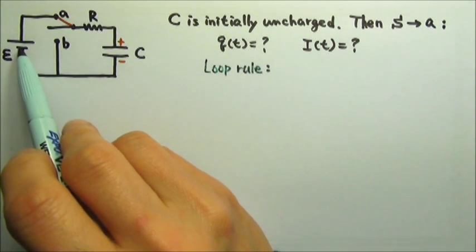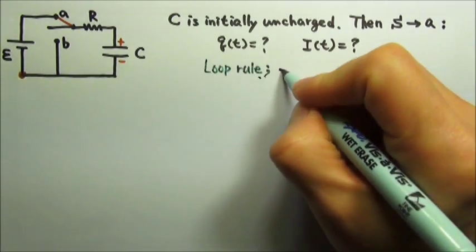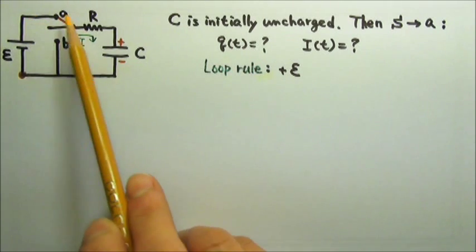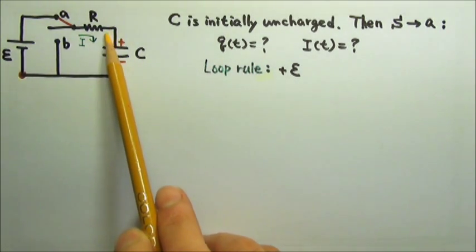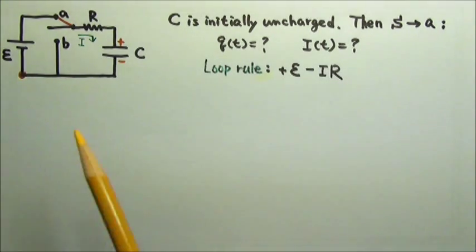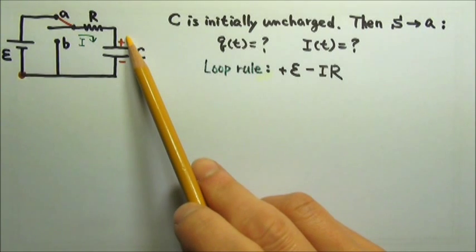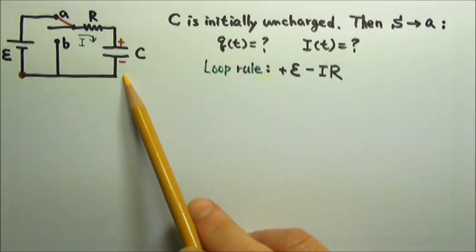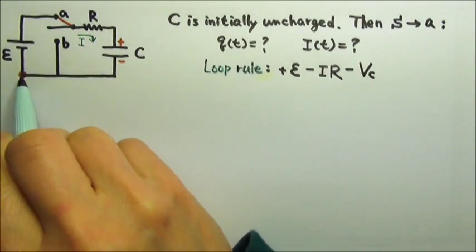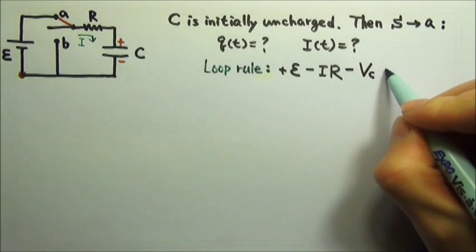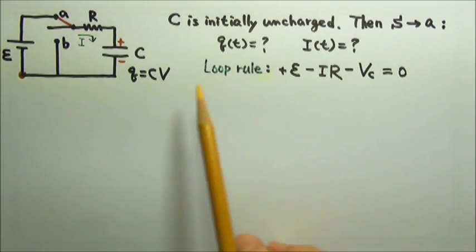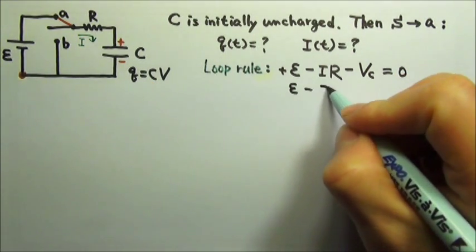First, we go from the negative terminal of the battery to the positive terminal of the battery, so it's plus E. The charging current flows clockwise in this loop, so when we go from here to there, we are following the current. If we are following the current, the potential goes down by I times R. Then we go across the capacitor from the positive plate to the negative plate, so the potential decreases by the voltage across the capacitor. And then we're back to the starting point, so the total change in potential equals zero.